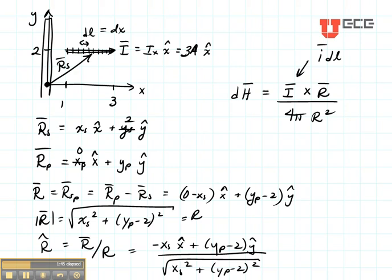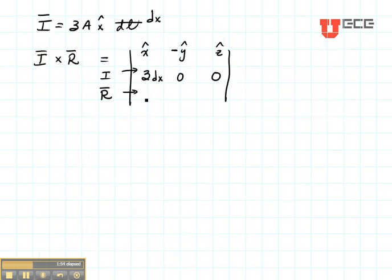Then right here, I'm going to put the R vector. The R vector is right here. So you can see that we have an XS term and a YP minus 2 term. So let's go plug that in. It's minus XS and it's YP minus 2 and it's zero in the Z direction.